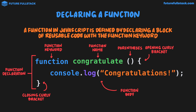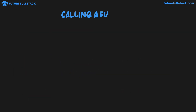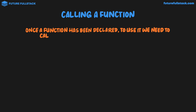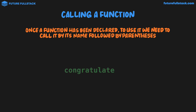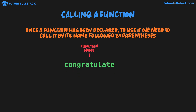So this is how we define our function. How do we go about using it in our program? To do that, we need to talk about calling a function. Once a function is declared, to use it we need to call it by its name followed by parentheses. So the function we just defined was called 'congratulate' — this is the function name. We then follow this with a set of parentheses, and this calls or executes our function in our program.